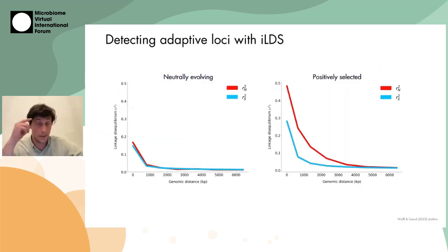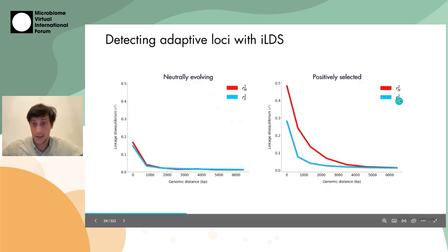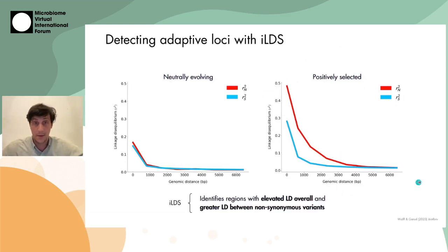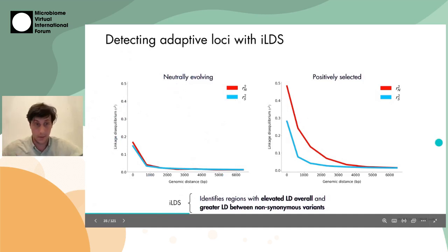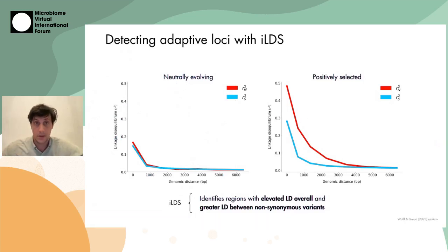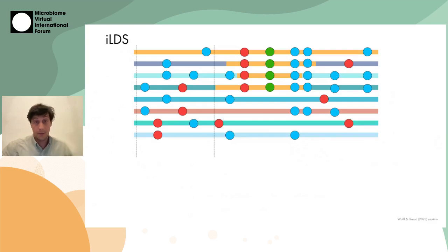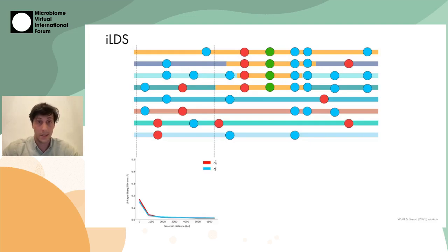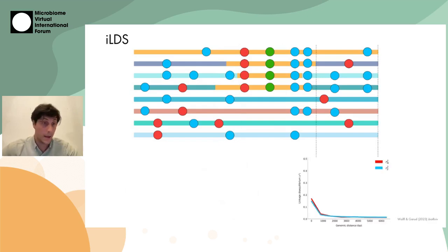To identify which specific sites are under selection, we developed a statistic called ILDS. ILDS essentially looks for regions of the genome that show elevated linkage overall and specifically elevated non-synonymous linkage relative to neutrally evolving regions. To run an ILDS scan, we cut the genome into windows with some number of variants, calculate LD curves, and assess whether each window looks like a positively selected region. We then calculate a value of our statistic for each window.